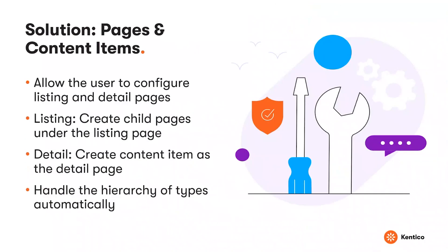Our solution uses configuration in app settings to let you set up a listing — specifying the URL and type for that listing. The migration tool will automatically create child pages underneath that listing page. You can also set up a detail page where children pages exist beneath it with structured content. The migration tool handles the type hierarchy automatically. For example, the out-of-the-box blog content type has a child called blog post, and those blog posts would automatically be children of that particular blog item if you created a detail for the blog.